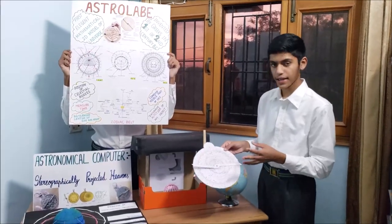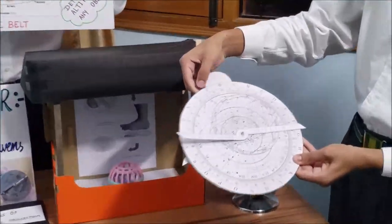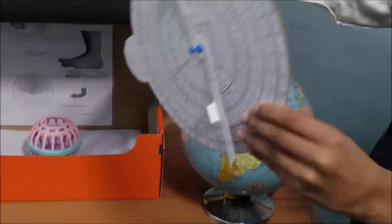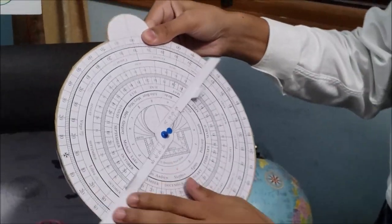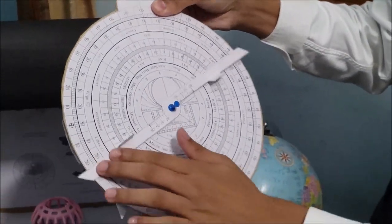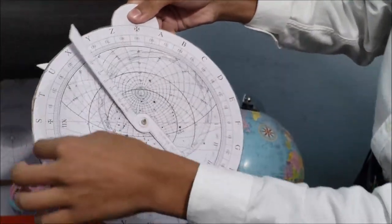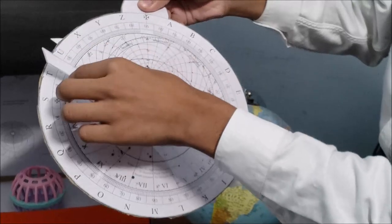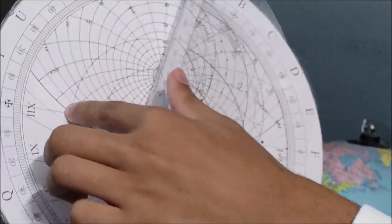So now I will explain the various parts of an astrolabe. This is the front of the mater and this is the back of the mater. This is the alidade. It is used to measure the altitude of the sun. Now this transparent sheet over here is the rete. This is the rule and over here is the plate.